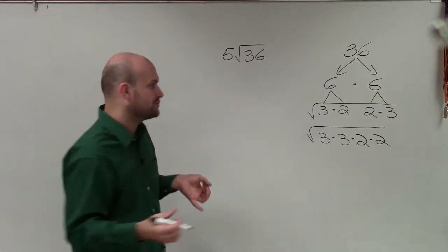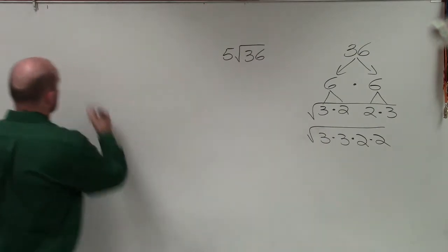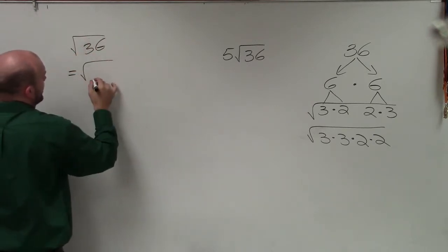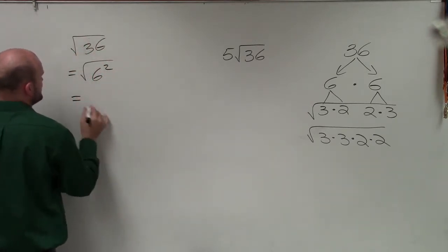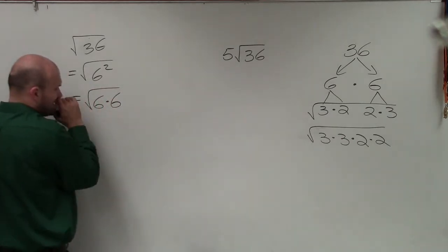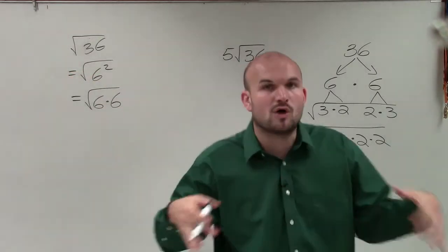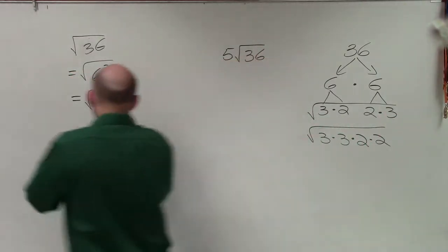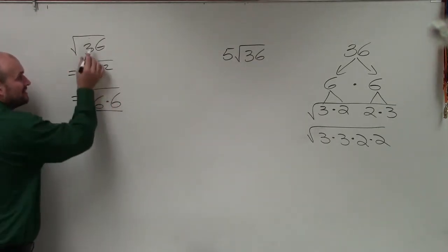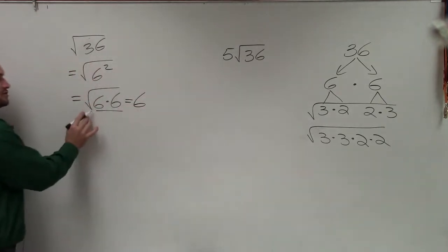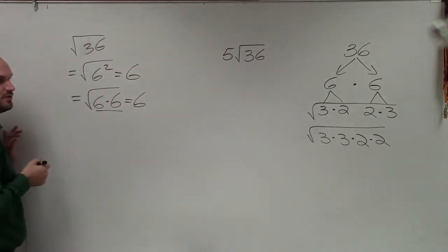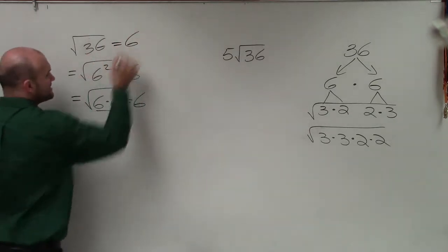Now, when we're looking at the square root, there are a couple things to understand. The square root of 36 is equal to the square root of 6 squared, which is equal to the square root of 6 times 6. The square root asks: what number multiplied by itself gives you 36? The only number is 6. So the square root of 6 times 6 is 6. Since 6 times 6 equals 6 squared, and 6 squared equals 36, the answer is 6.